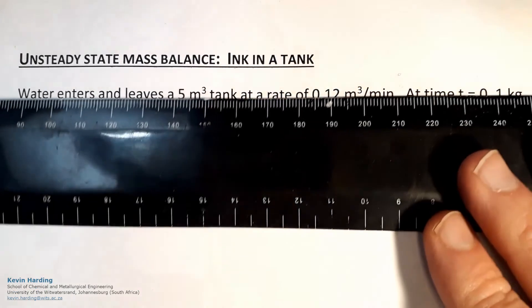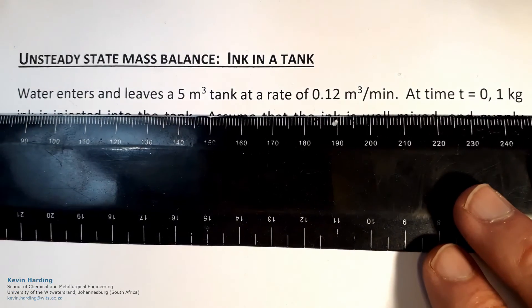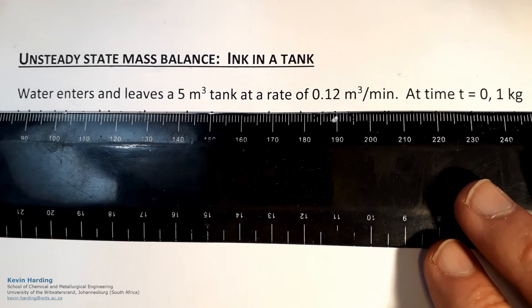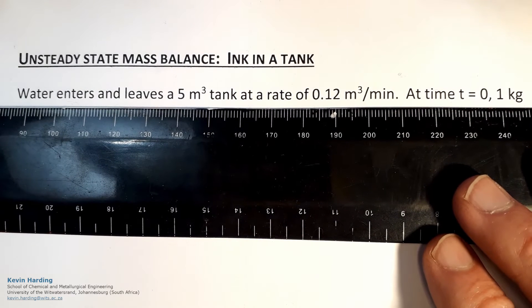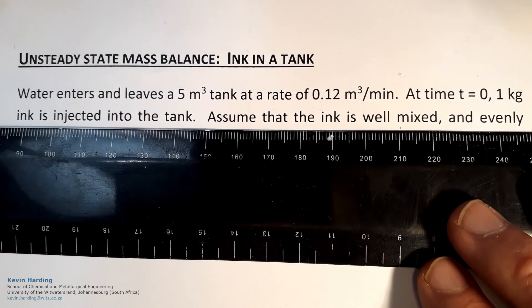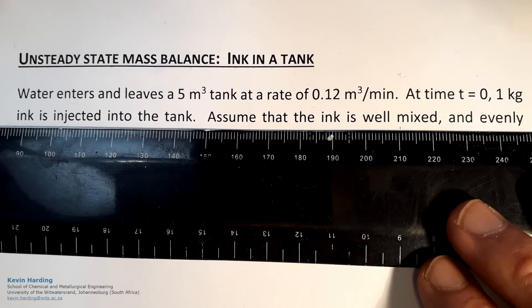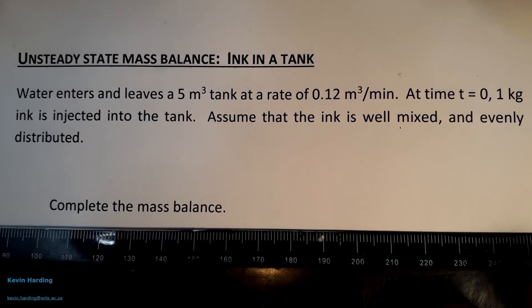What we want to look at here is an unsteady state mass balance, or an ink in a tank example. Water enters and leaves a 5 cubic meter tank at a rate of 0.12 cubic meters per minute. At time t equals 0, 1 kilogram of ink is injected into the tank. We assume the ink is well mixed and evenly distributed. The question is: complete the mass balance.